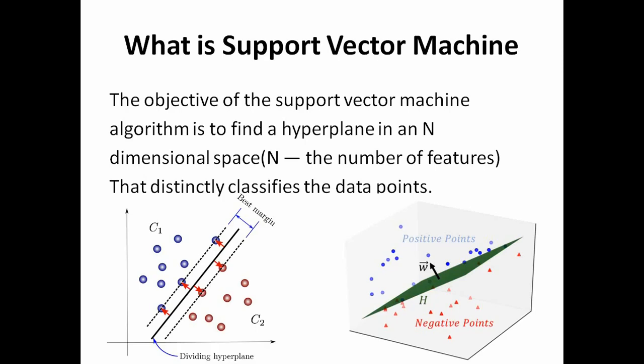When the support vector machine is applied for classification, it's called support vector classification, and when this concept is applied for regression, that model is called support vector regression. To understand support vector regression, you must understand support vector machines. Let's see what support vector machine is. The objective of the support vector machine algorithm is to find a hyperplane in an n-dimensional space, where n stands for the number of features or the number of independent variables.